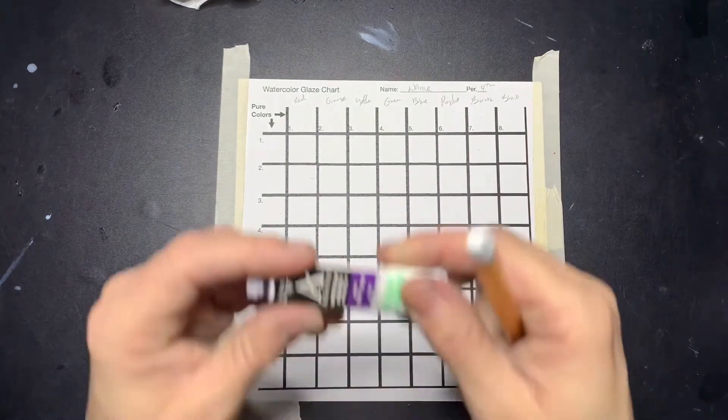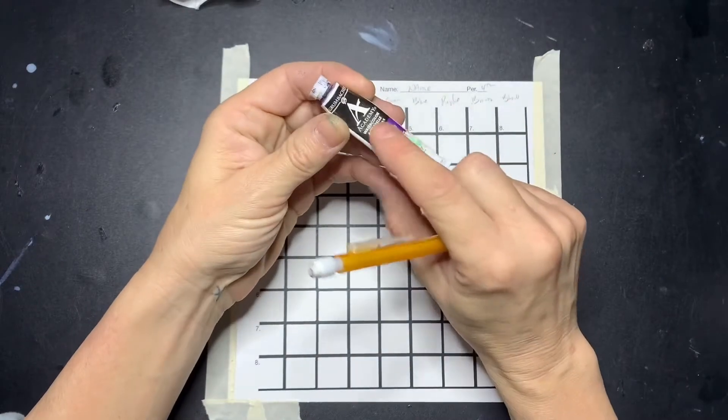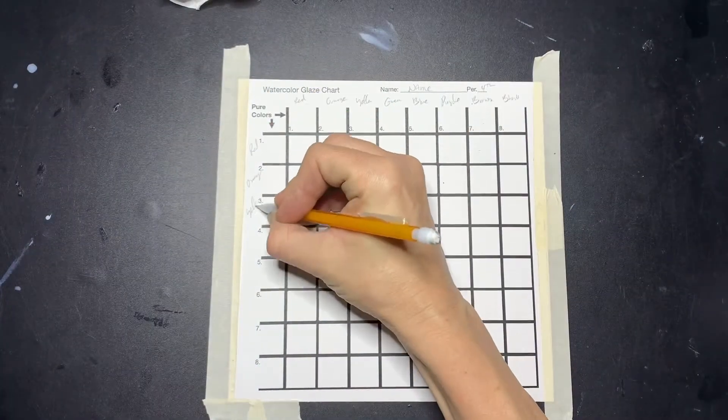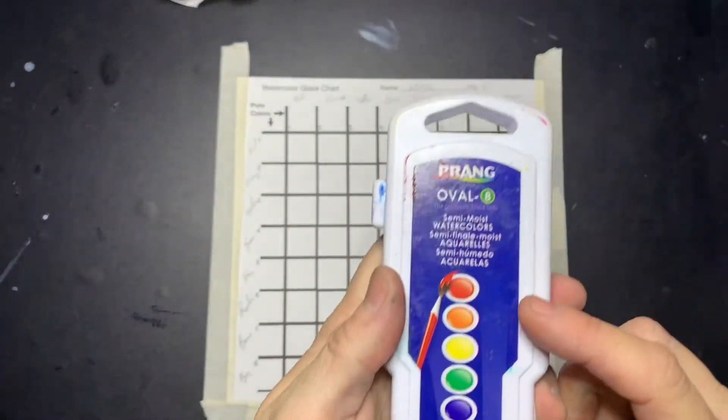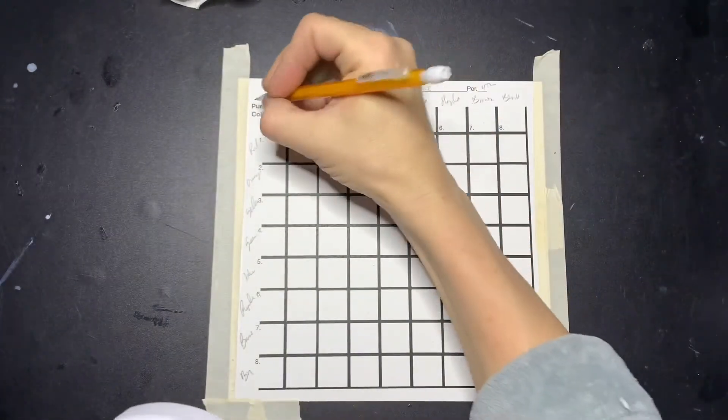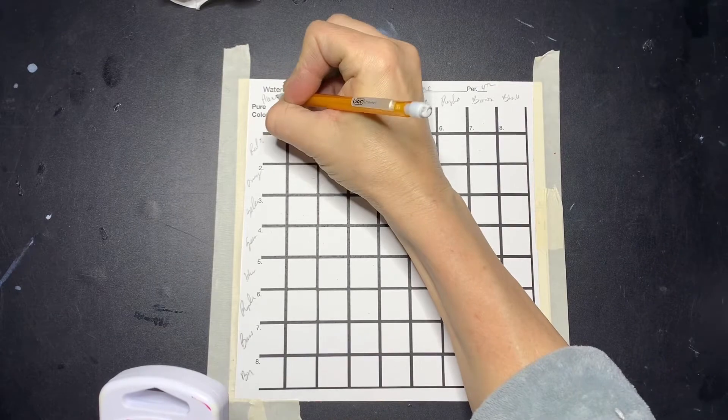If you have tubes, double-check where the name is and put that specific name of your color. You'll go across the top and down the sides. Make sure you also write the brand, because different brands' colors will look different.